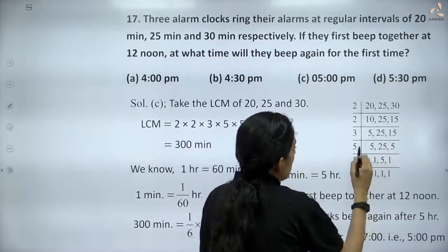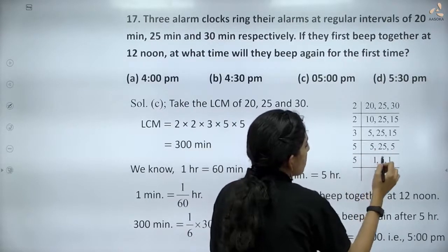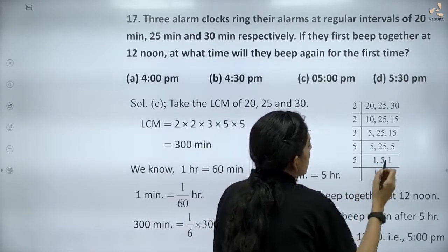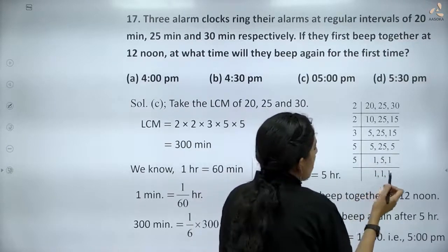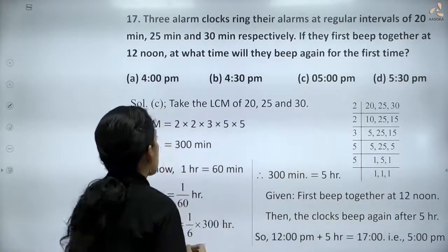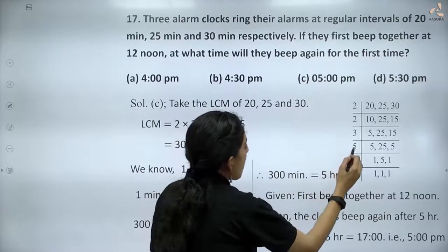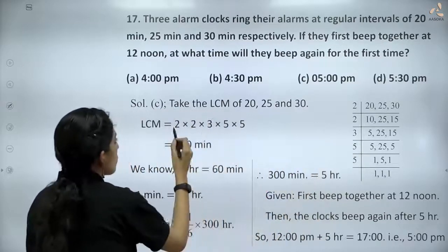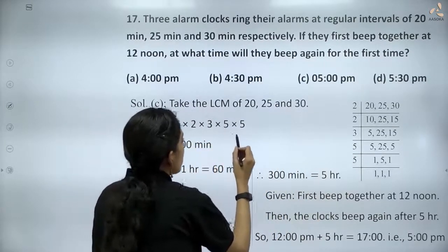Dividing by 5, you get 1, 5, and 1. Dividing by 5 again, you get 1, 1, and 1. So the LCM is 2 × 2 × 3 × 5 × 5. That's 4 × 3 = 12, 12 × 5 = 60, 60 × 5 = 300 minutes.